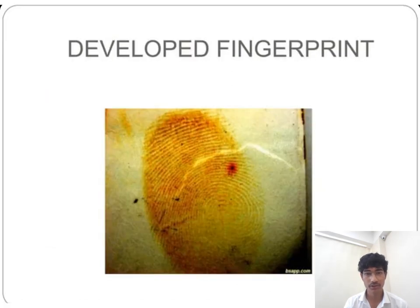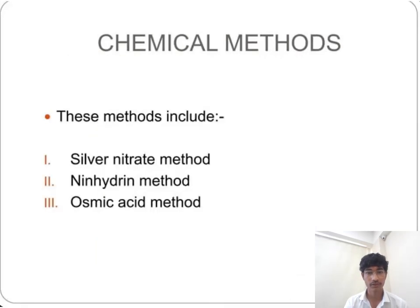Here are images of developed fingerprints by the iodine fuming method. Now let's talk about chemical methods. These methods include the silver nitrate method, the ninhydrin method, and the osmic acid method.